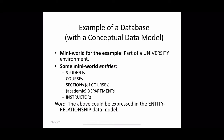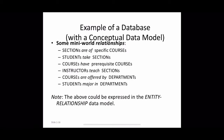To learn different aspects, we have chosen a university database as our example, where the mini world is a part of a university environment. Different entities include students, courses, sections of courses, departments, and instructors. The university database maintains information about students, courses, grades, etc. Examples of relationships between entities include: sections are of specific courses; students take sections; courses have prerequisite courses; instructors teach sections; courses are offered by departments; and students major in departments.